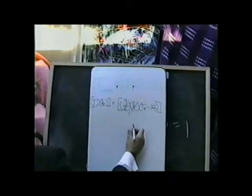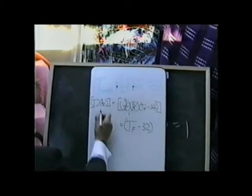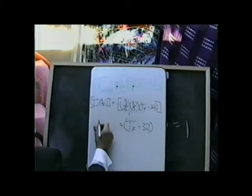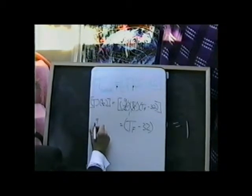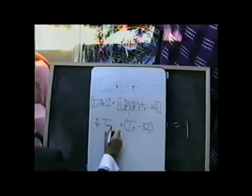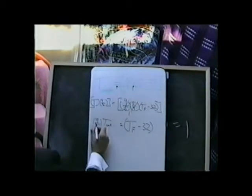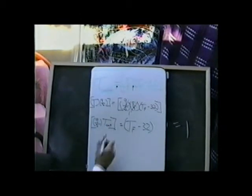So now we have the temperature in Fahrenheit minus 32. We're going to keep this in parentheses. Equals 9 fifths of the temperature in centigrade. We're going to keep this in parentheses and brackets. There's multiplication going on here.